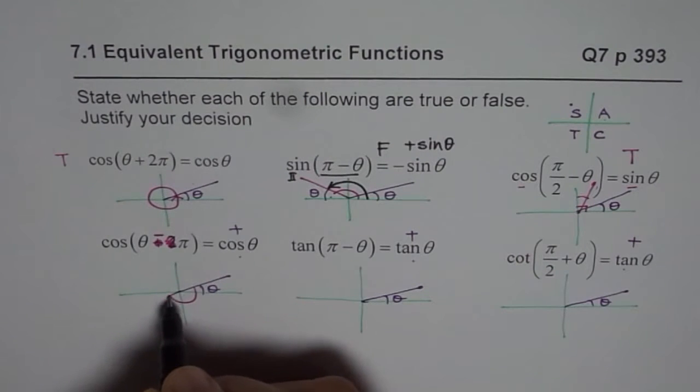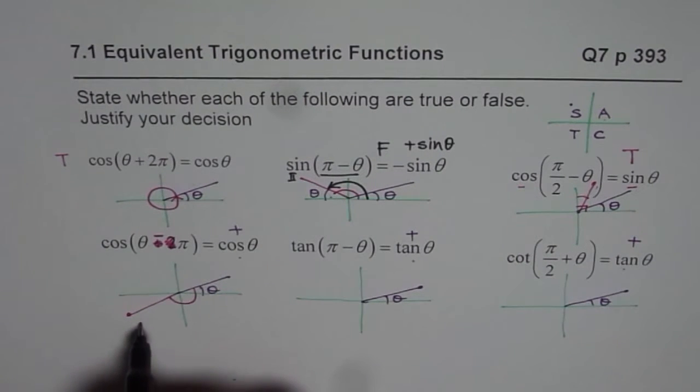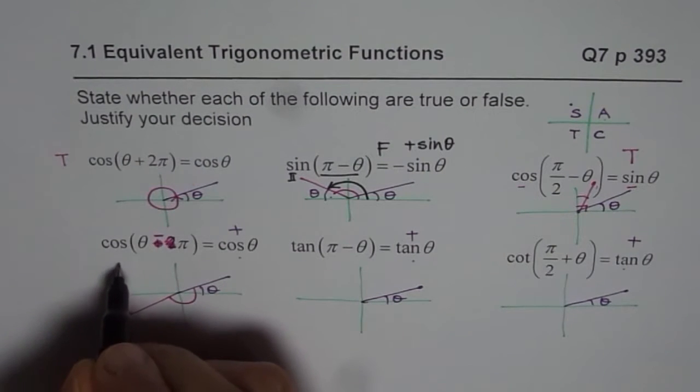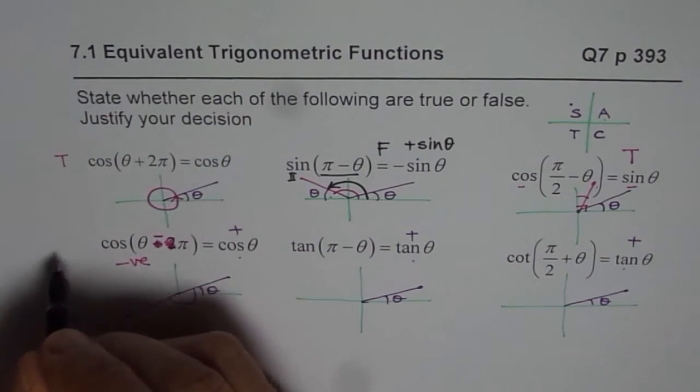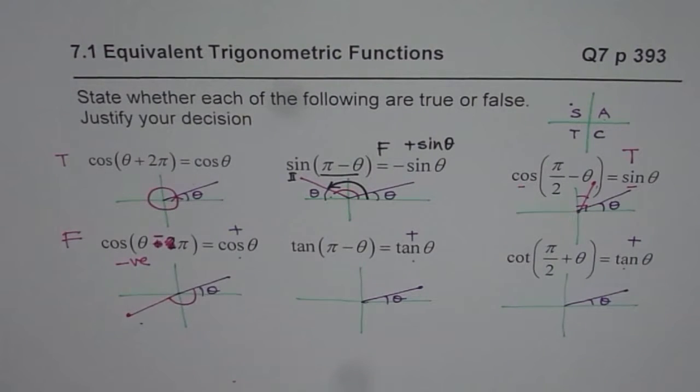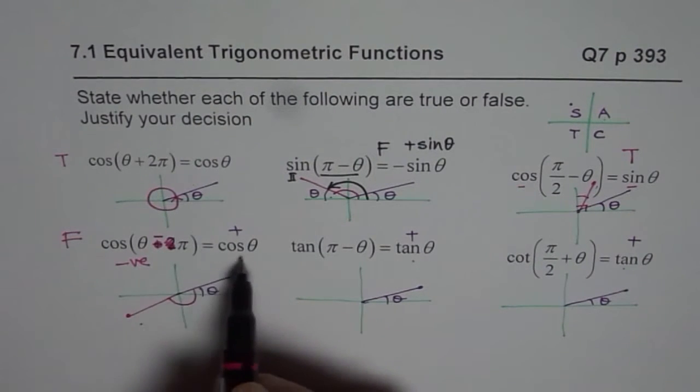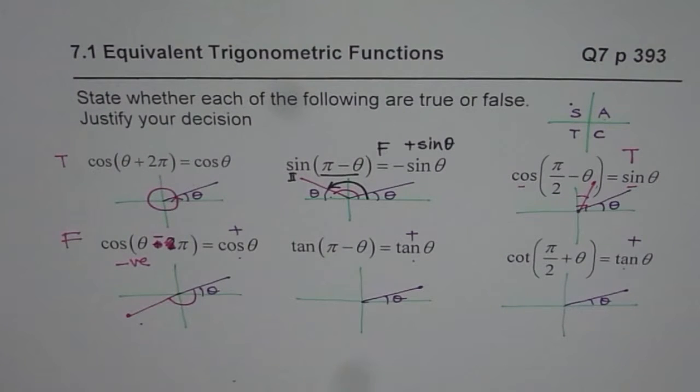In quadrant 3, cos is negative. So this answer should be negative. Since we have positive there, this statement is false. Do you get the idea? So we made this statement false by changing the question.